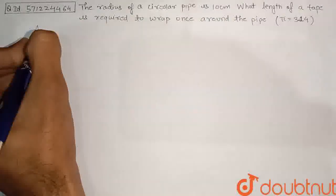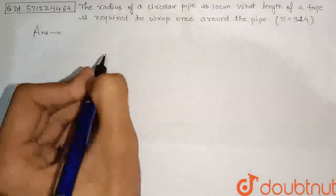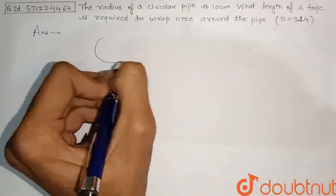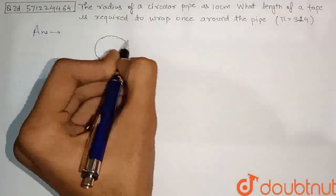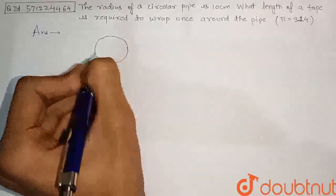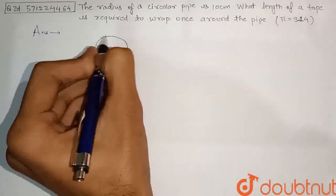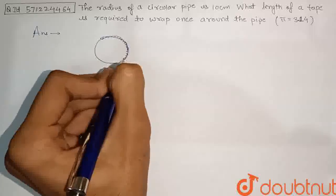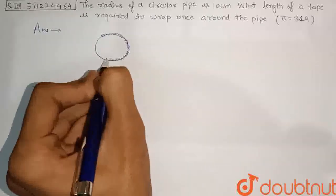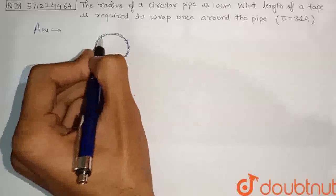So let's begin with the solution of this question. Let's consider any pipe like this. Let this be the cross section of the pipe. And we need to wrap a tape on this whole pipe. So the pipe is circular, so we need to wrap a tape like this. This is the length of the tape which is needed for wrapping this whole pipe.